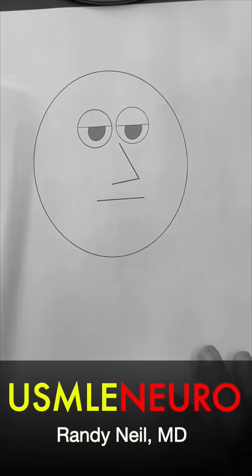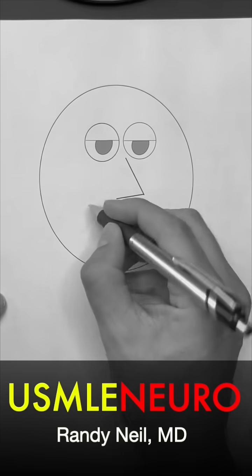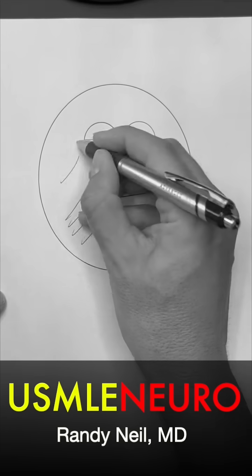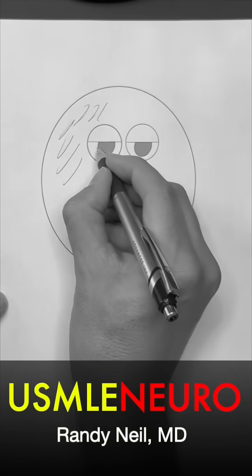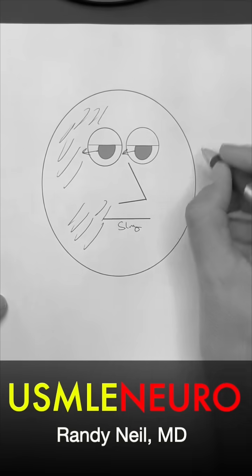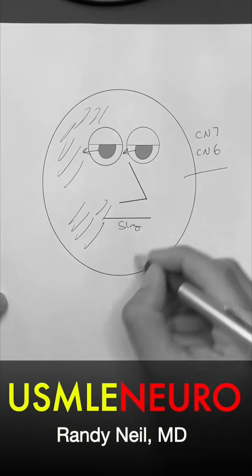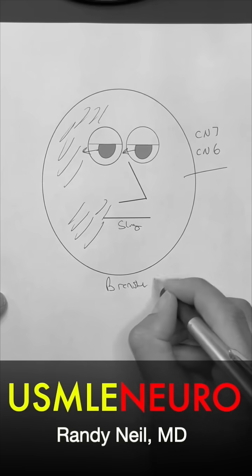Now, if I took the same person and I said slurred speech, drooping of the face, upper, lower, it looks like Bell's palsy, but they can't look to the right. So something else explains that. Not only is it cranial nerve 7, but cranial nerve 6. You better be thinking brainstem stroke.